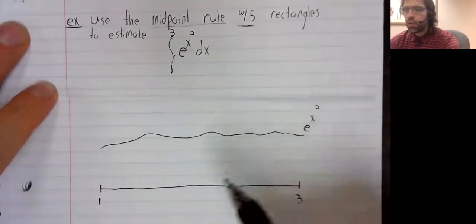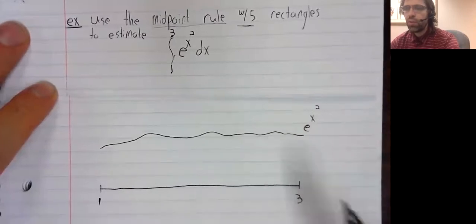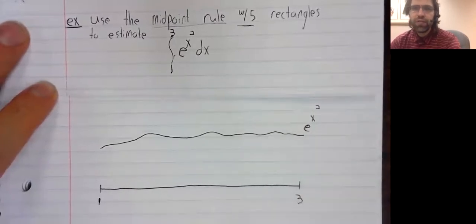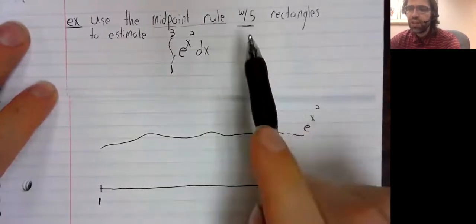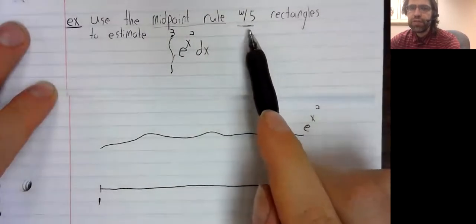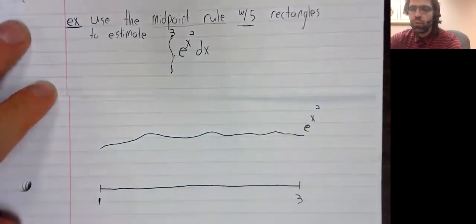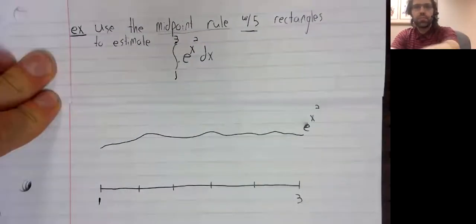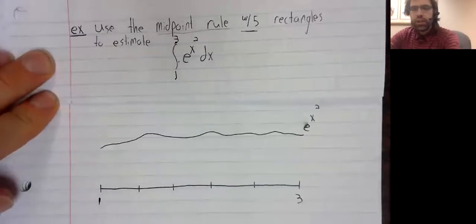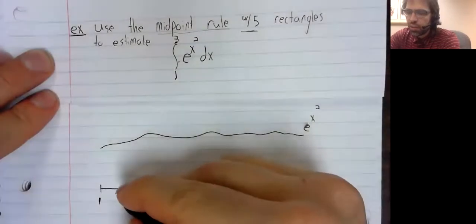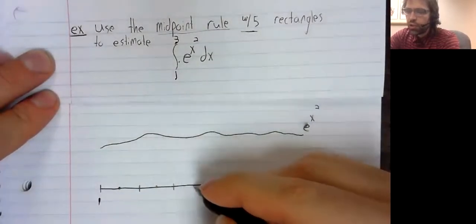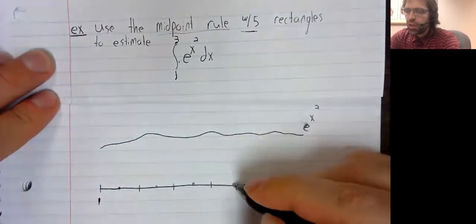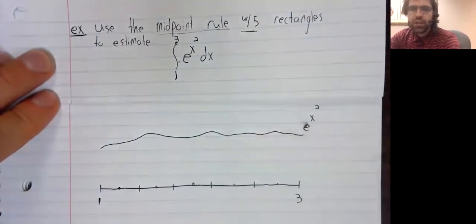And we're going to cut this interval up into five evenly sized pieces in order to create five rectangles. And the midpoint rule says when we create the rectangles, we should use the midpoint.